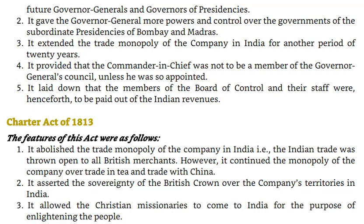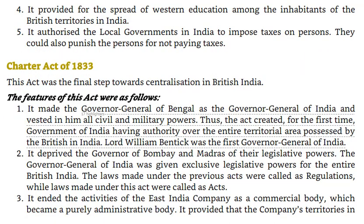Charter Act of 1813. Its features were: 1. It abolished the trade monopoly of the Company in India — the Indian trade was thrown open to all British merchants. However, it continued the monopoly over trade in tea and trade with China. 2. It asserted the sovereignty of the British Crown over the Company's territories in India. 3. It allowed Christian missionaries to come to India for the purpose of enlightening the people. 4. It provided for the spread of Western education among inhabitants of the British territories in India. 5. It authorized local governments in India to impose taxes on persons and to punish persons for not paying taxes.